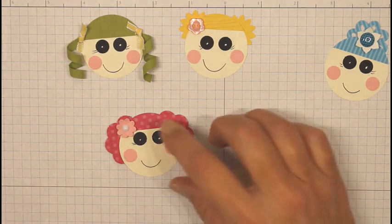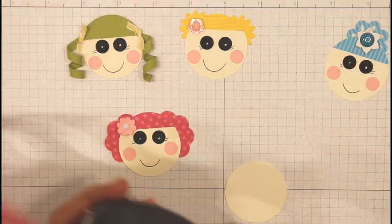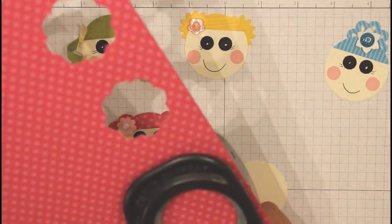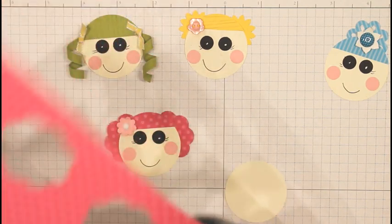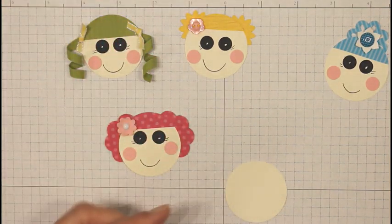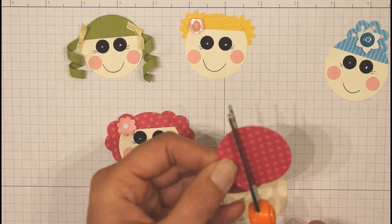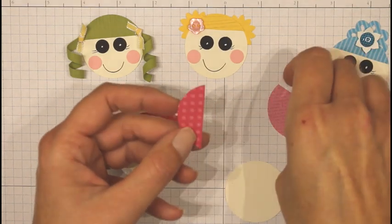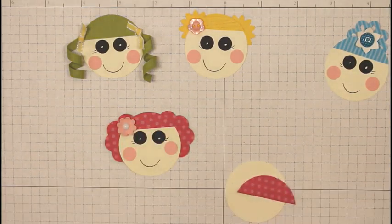And then for the upper part of her hair, using the one and three-quarter inch circle punch again and a piece of Melon Mambo Designer Series paper, we'll punch out another circle. Take our scissors and just cut the upper portion of that circle off and we'll attach that with a two-way glue pen.